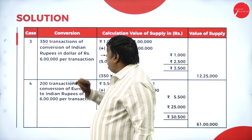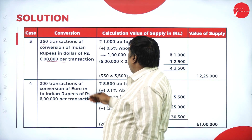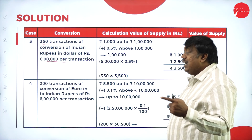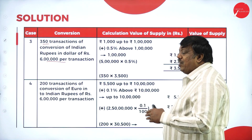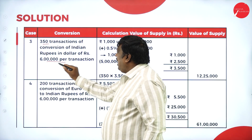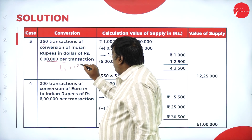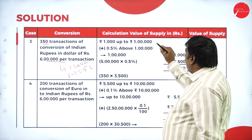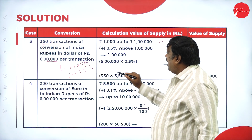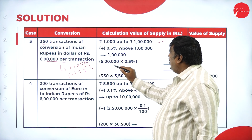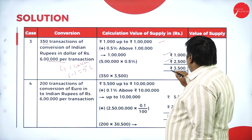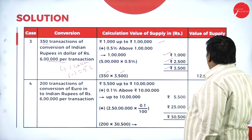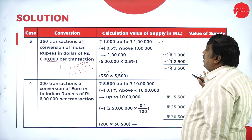Case 3: 350 transactions at ₹6 lakhs per transaction. Since ₹6 lakhs is above ₹1 lakh, the slab applies: ₹1,000 up to ₹1 lakh, then 0.5% on the remaining ₹5 lakhs = ₹2,500. Total per transaction = ₹1,000 + ₹2,500 = ₹3,500. Total for 350 transactions = 350 × ₹3,500 = ₹12,25,000.